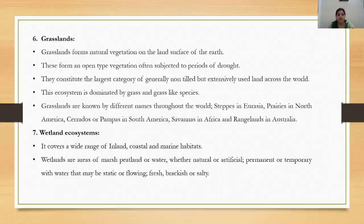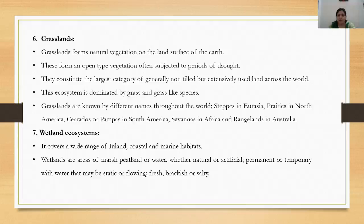The next major ecosystem is grasslands, which form natural vegetation on the land surface of the Earth. These are open-type vegetation often subjected to periods of drought, constituting the largest category of generally non-tilled but extensively used land across the world. Grasslands are dominated by grass and grass-like species and are known by different names: steppes in Eurasia, prairies in North America, Campos or Pampas in South America, savannahs in Africa, and rangelands in Australia.